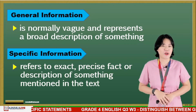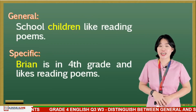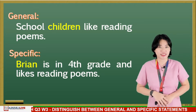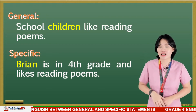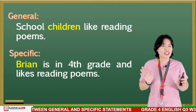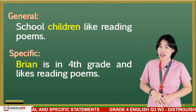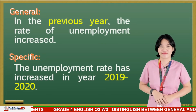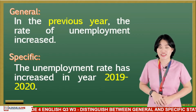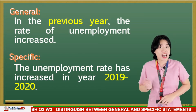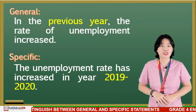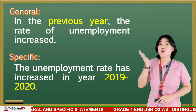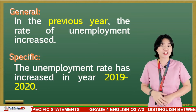Let's have some examples. 'Schoolchildren like reading poems.' 'Brian is in 4th grade and likes reading poems.' The word children is general because it represents a broad idea, while Brian is specific because he is a precise example of a child. Next: 'In the previous year, the rate of unemployment increased.' 'The unemployment rate has increased in year 2019 to 2020.' Here, previous year is general information, while 2019 to 2020 refers to the specific year.